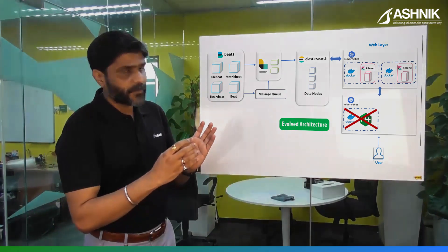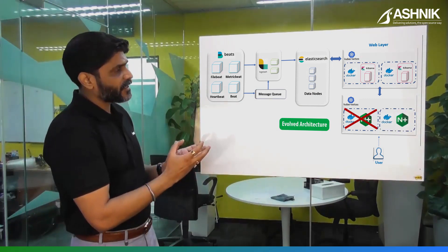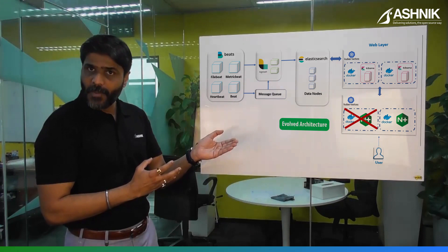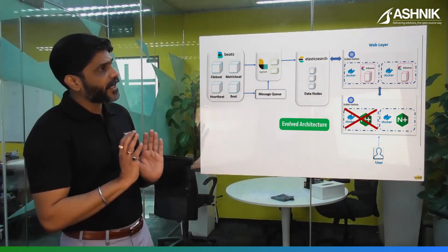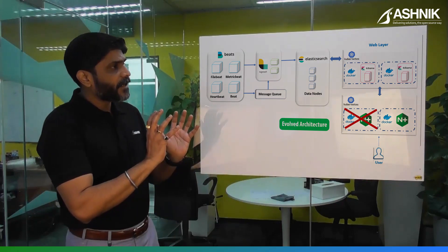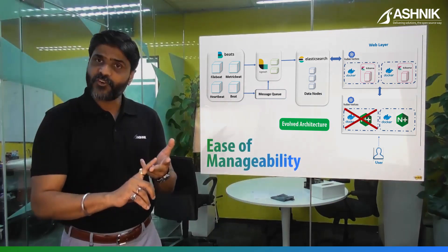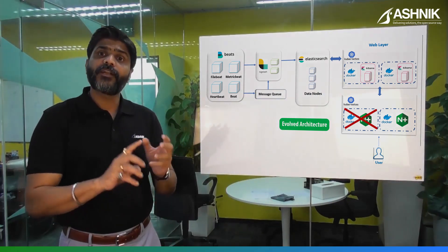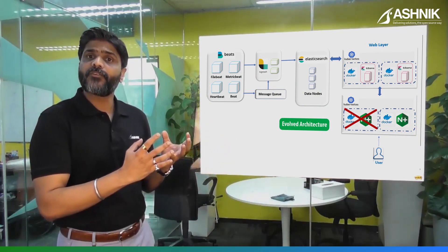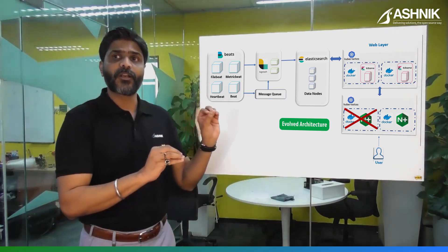Instead of adding another passive node for Nginx, we decided to containerize Nginx as well. As you can see on the slide, if Nginx goes down, a new container can come up to act as the load balancer. Overall, if you look at the right-hand side of this slide, the Kibana nodes and Nginx as a load balancer are containerized. What this provides the customer is scalability — dynamic scalability — ease of manageability, and very importantly, portability. Today they are on premises, and tomorrow if they want to move to any cloud service provider, because everything is containerized, it becomes much more portable to go to the cloud.